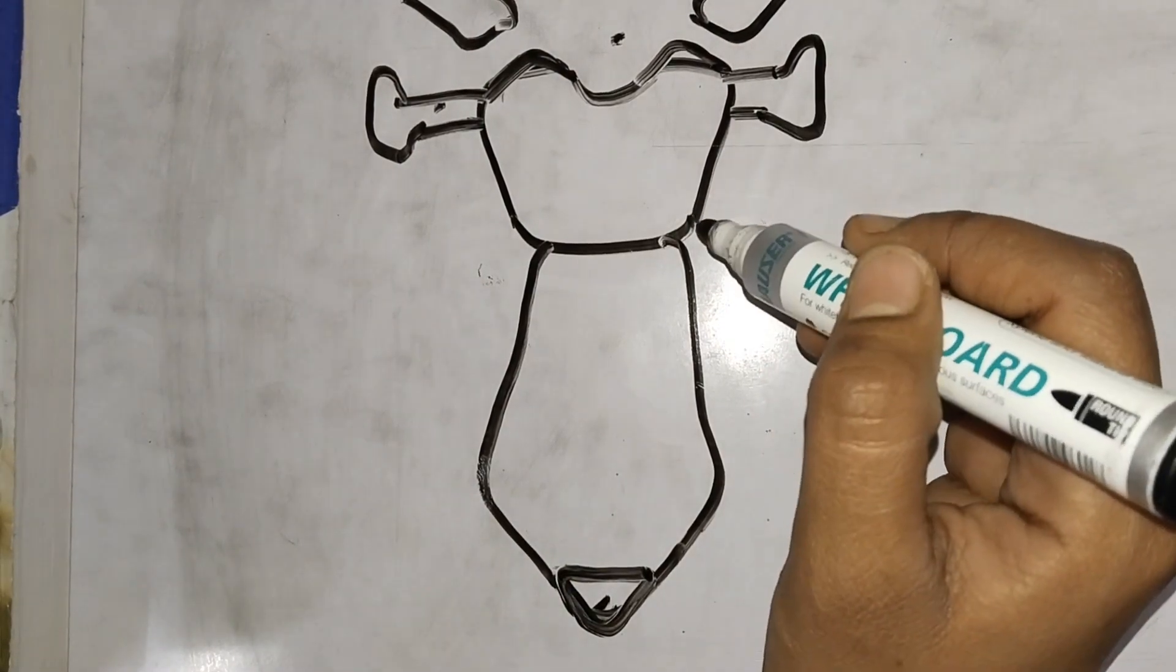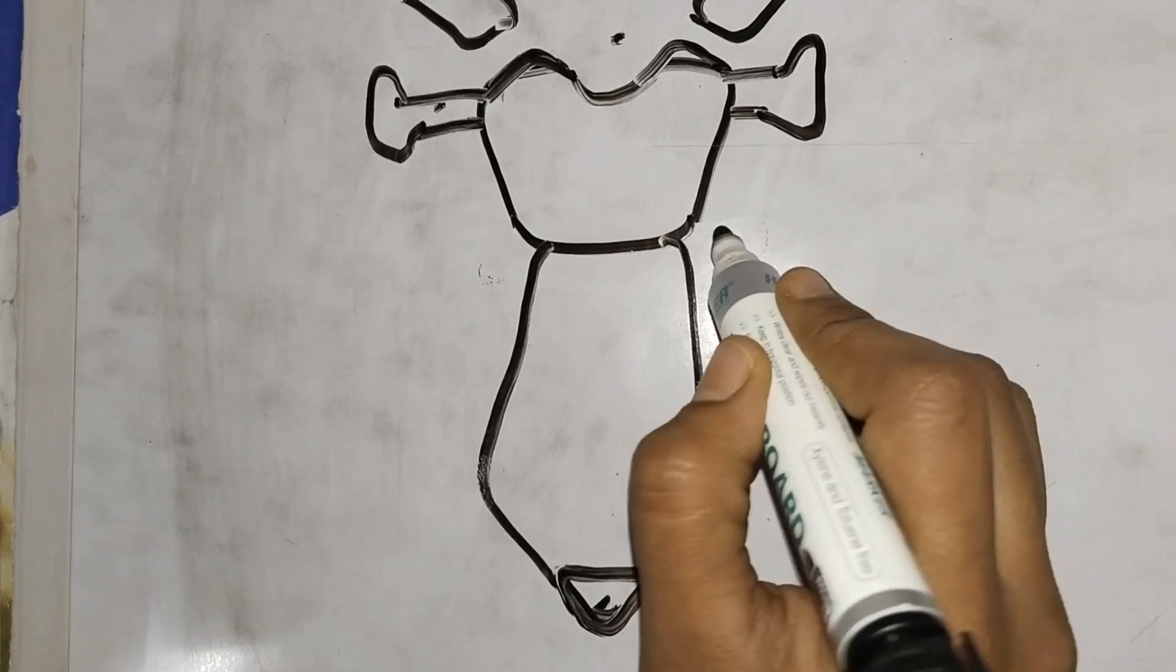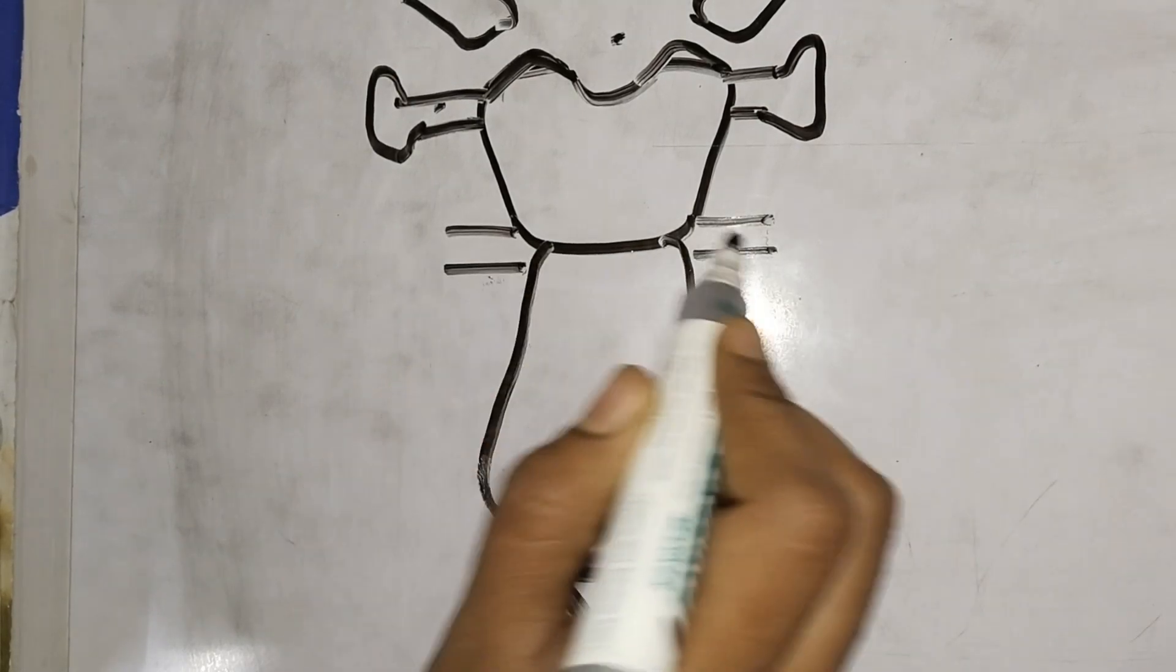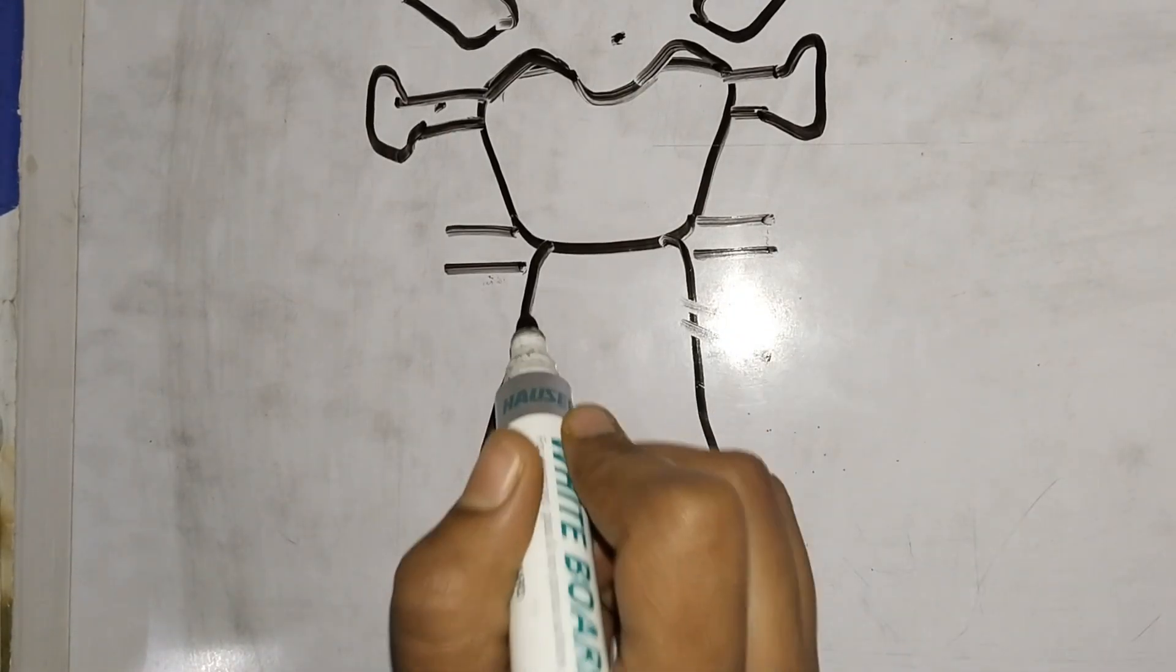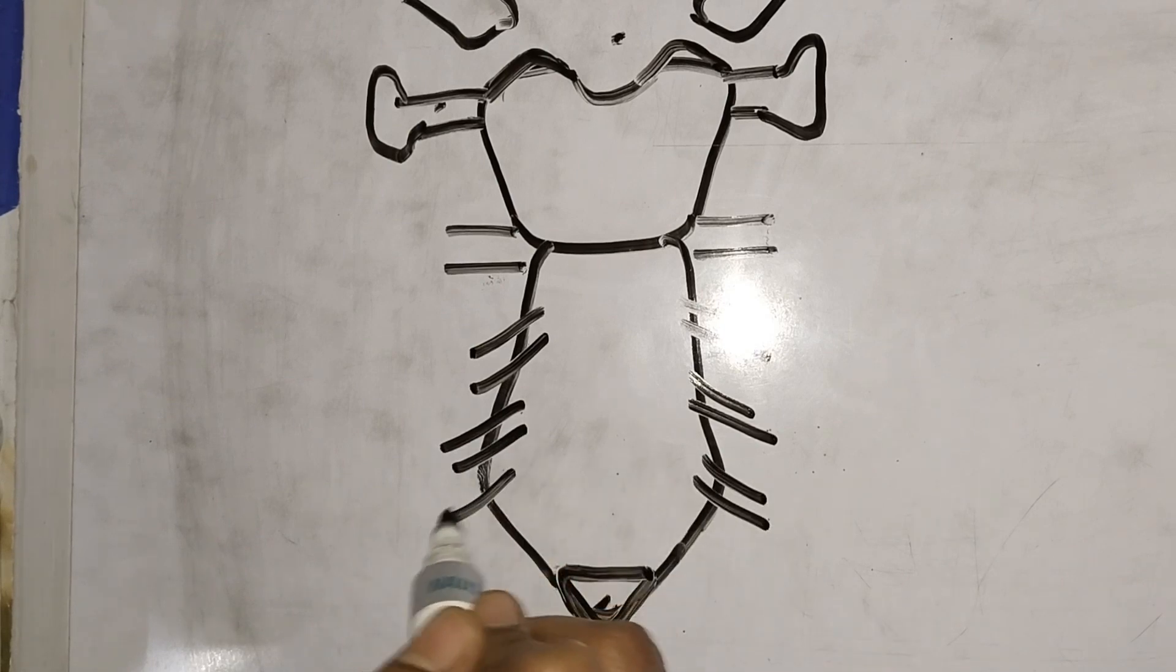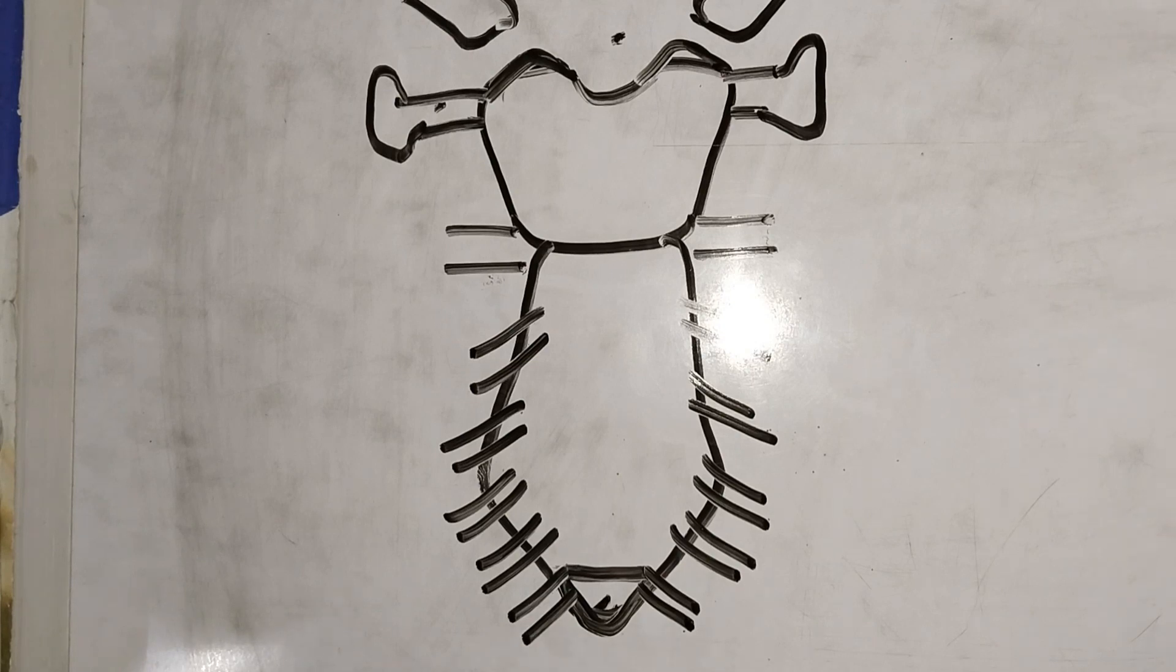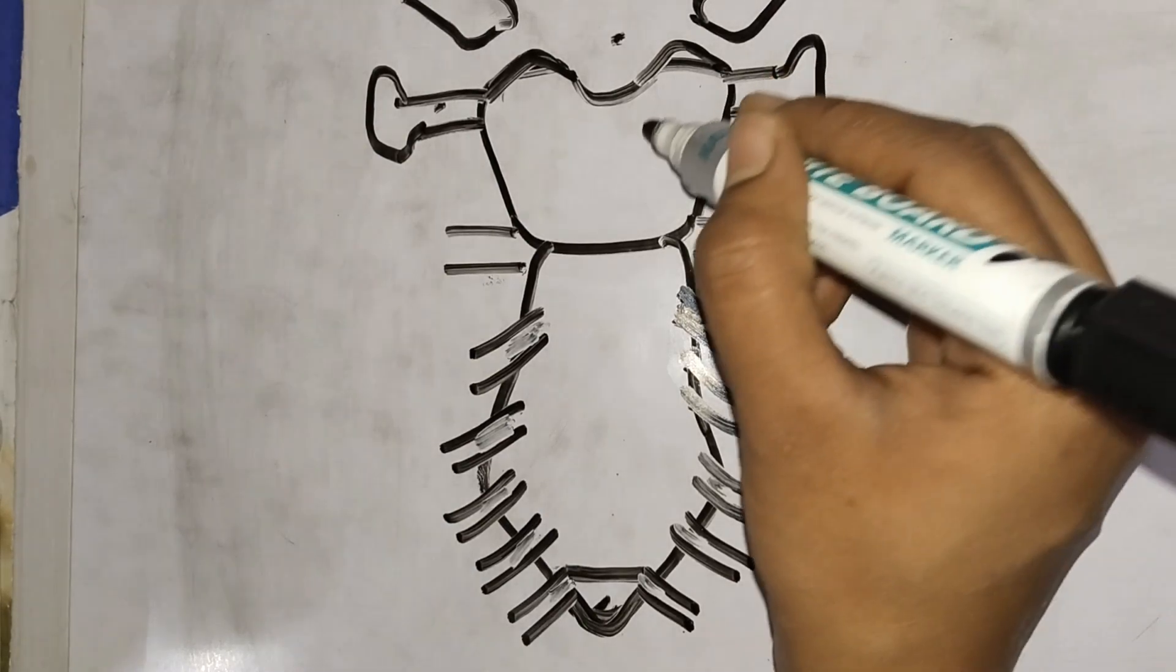And now we have a muscle attachment to the origin. Again we are going to include the ribs. There are seven ribs. First we have to cut, then we are going to make a little demi-facet. Then we have to cut the ribs. Fourth, fifth, sixth, seventh demi-facet. And the rest will be clear. This is the basic structure of sternum.